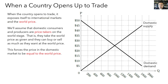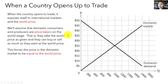What happens if this country then opens up its domestic markets to international trade? The effect is that you expose your domestic markets to international markets, and specifically to the world price — the price that the good is being traded for on international markets. We're going to assume that domestic consumers and producers are price takers on the world stage, meaning they take the world price as a given, they can't individually influence the world price, and they can buy or sell as much as they want at the world price.